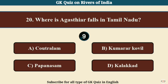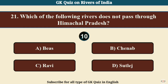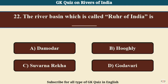Question 20: Where is Agasthiyar Falls in Tamil Nadu? Question 21: Which of the following rivers does not pass through Himachal Pradesh? Question 22: The river basin which is called the Roar of India is?